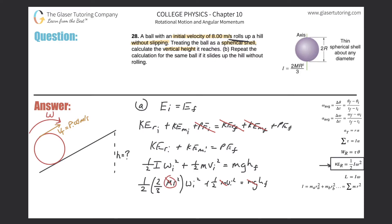Since mass m is common in every term, we can factor it out and cancel it. Combining the one-half and two-thirds gives one-third, so we now have: one-third r²ωi² plus one-half vi² equals g times hf.